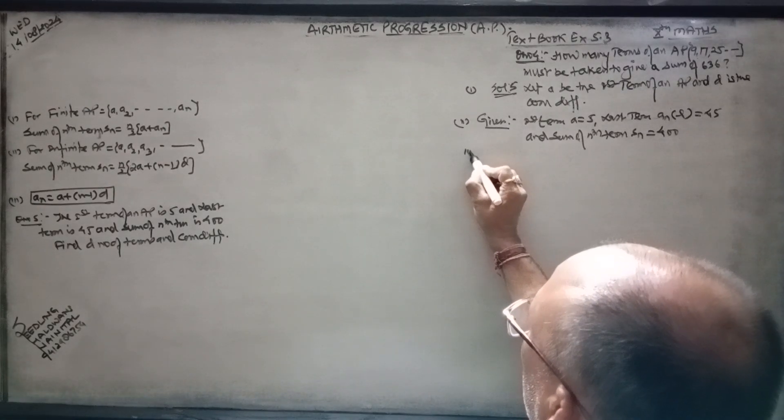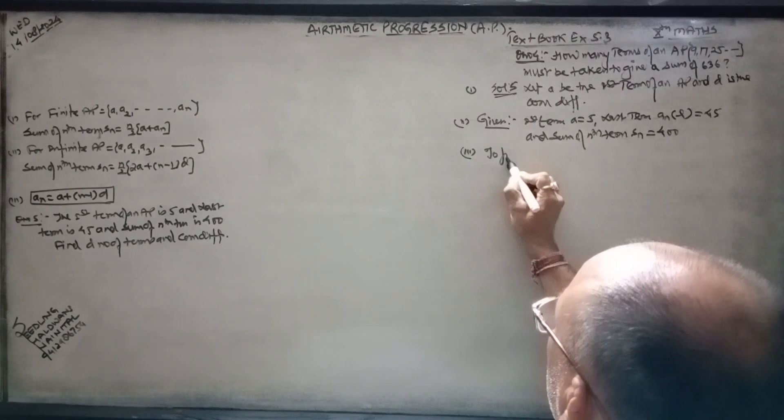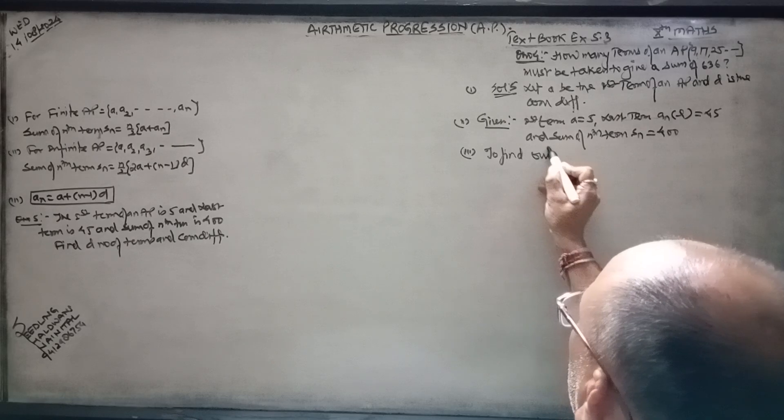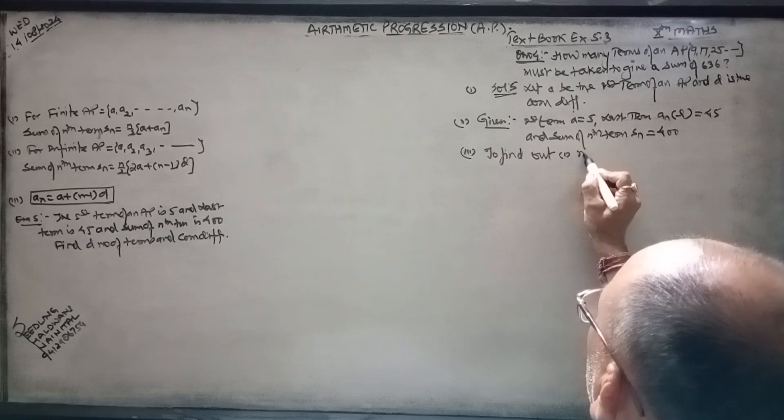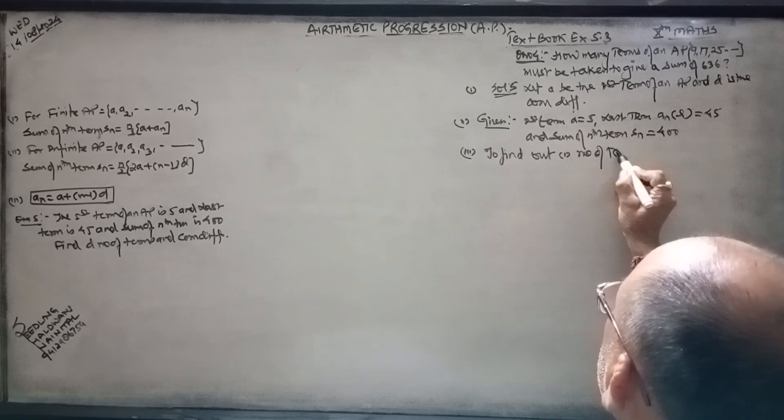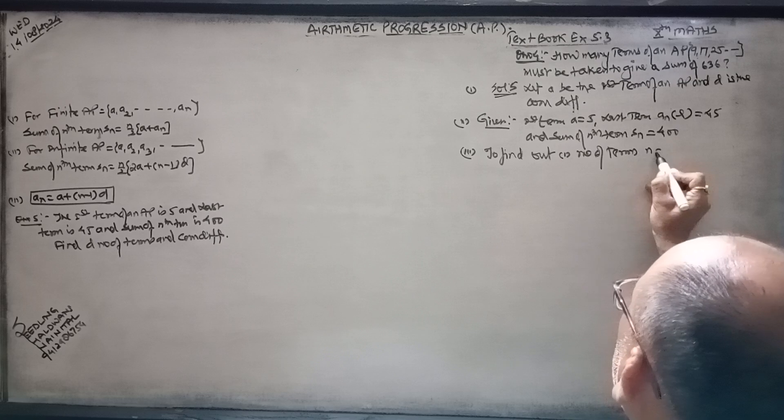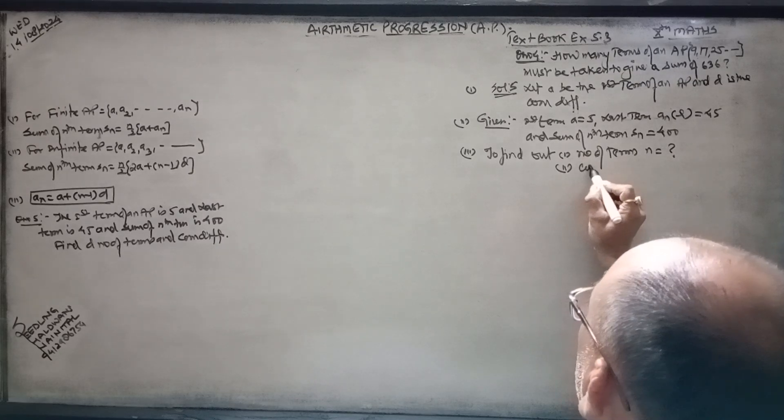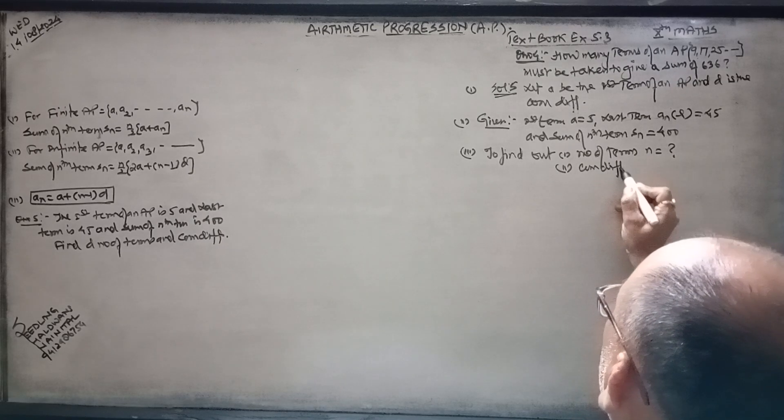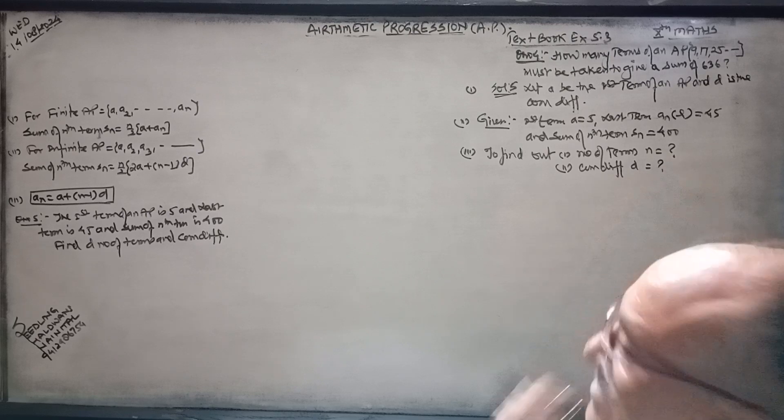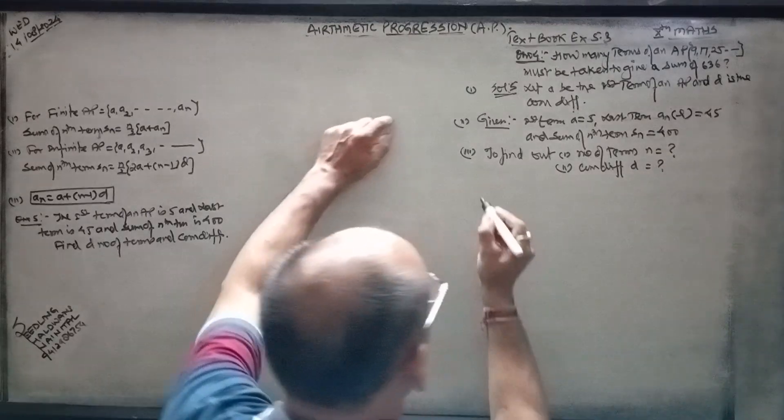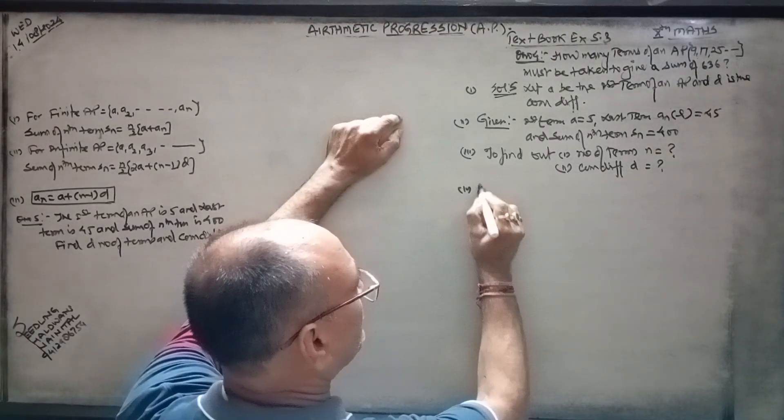And then after that, to find out the number of terms n, and another thing you need to find is the common difference d.